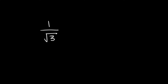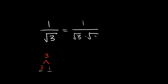Here we have 1 over the square root of 3. This one is different because the bottom can't really be broken up into useful factors — 3 is prime, so all we could do is break it into 3 and 1, and the square root of 1 is just 1, so that doesn't help. So whenever you have a radical in the denominator with a prime number, what we have to do is rationalize the denominator. This is kind of a topic on its own, but I'll go over it here quickly.